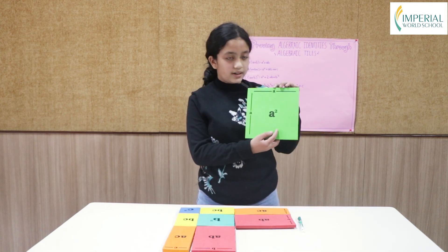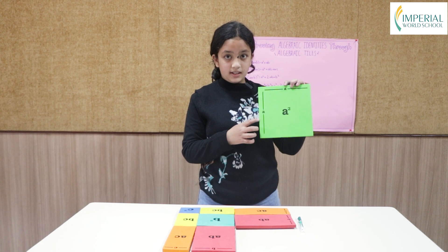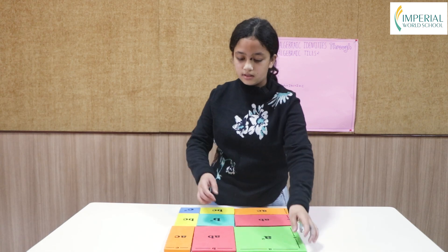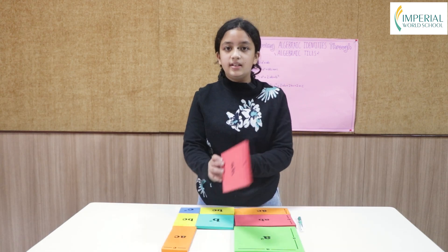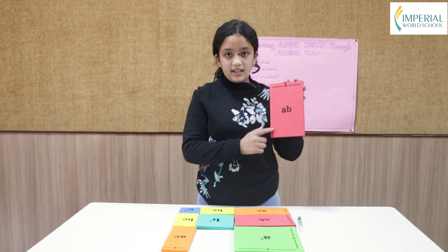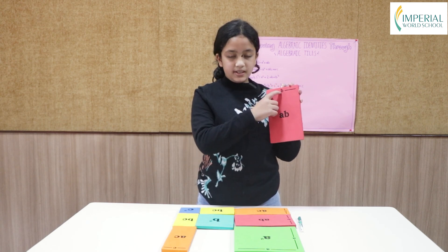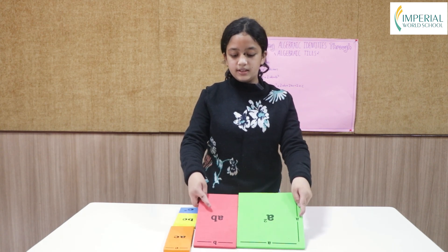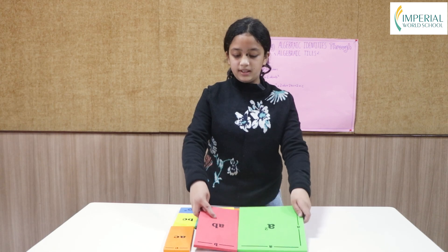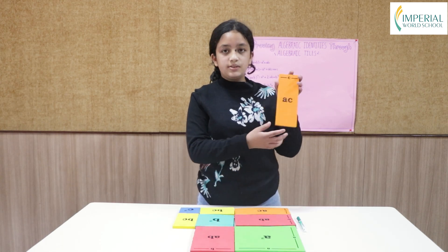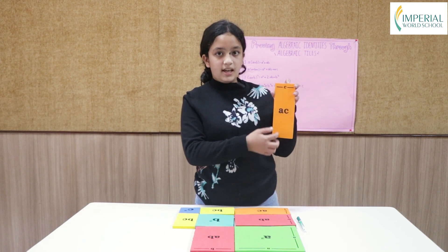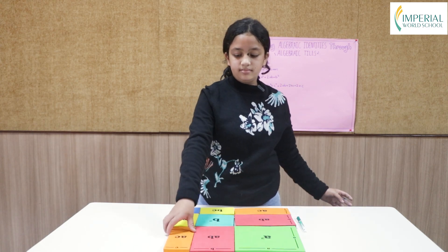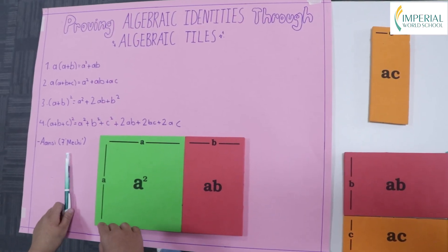Here we have the tile a-square: the length is a and the breadth is a, so a times a is a², hence the tile a². This tile is ab: the length is a and the breadth is b, so a times b is ab. And here is the tile ac: the length is a and the breadth is c, so a times c is ac.